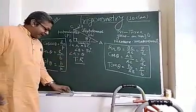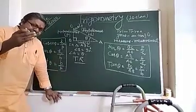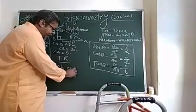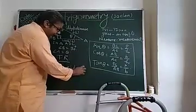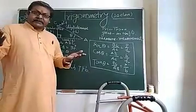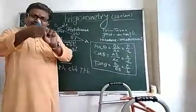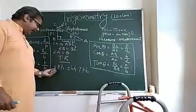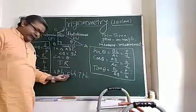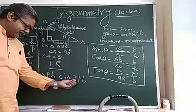That is, whenever I was in class 9, then our teacher said that sentence, first letter of each word. Some people have curly brown hair tightly pulled back. S for sine, P for perpendicular, H for hypotenuse. C for cosine, B for base, H for hypotenuse. T for tan, P by B, perpendicular by base.